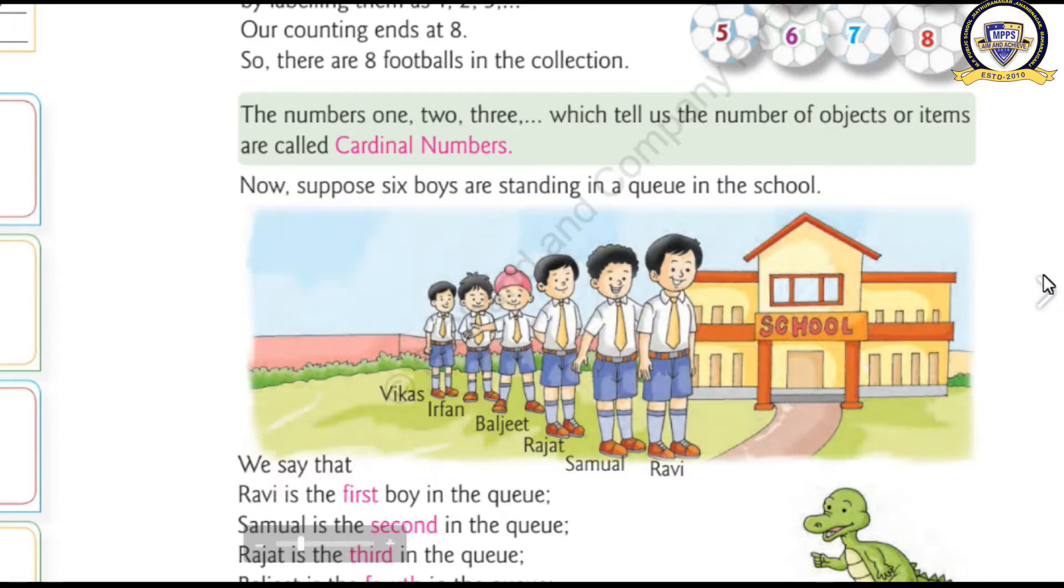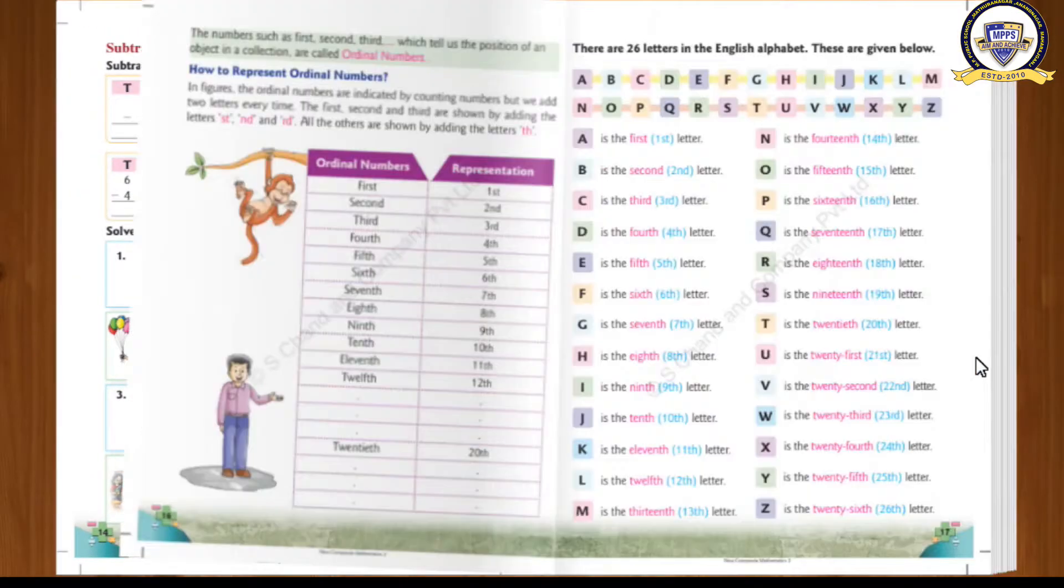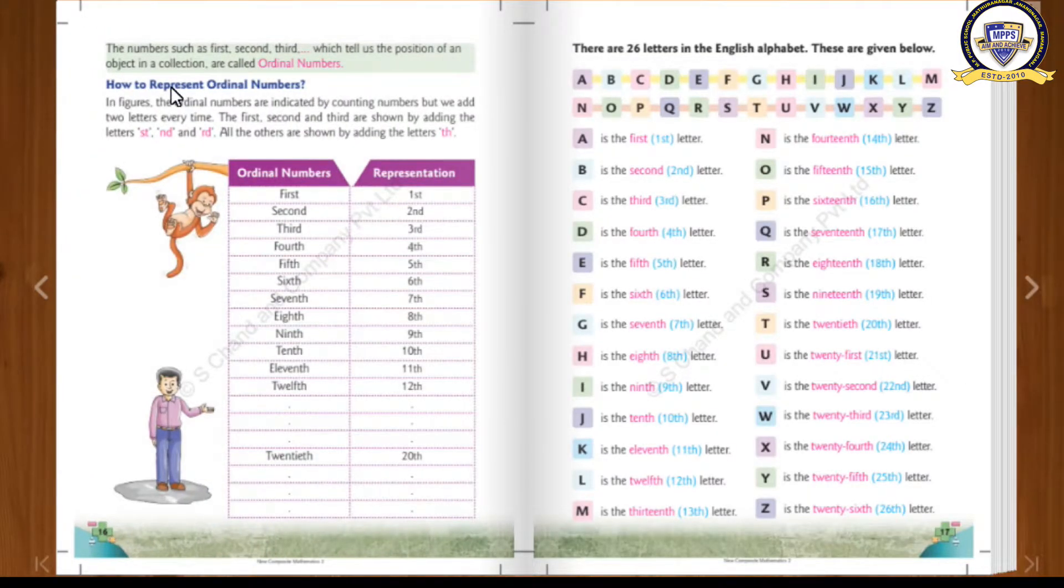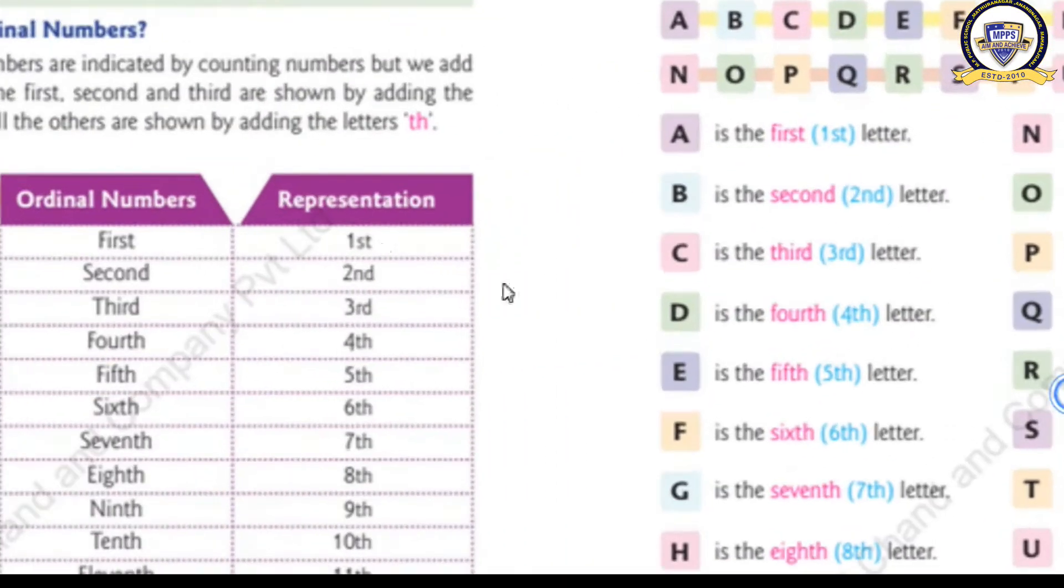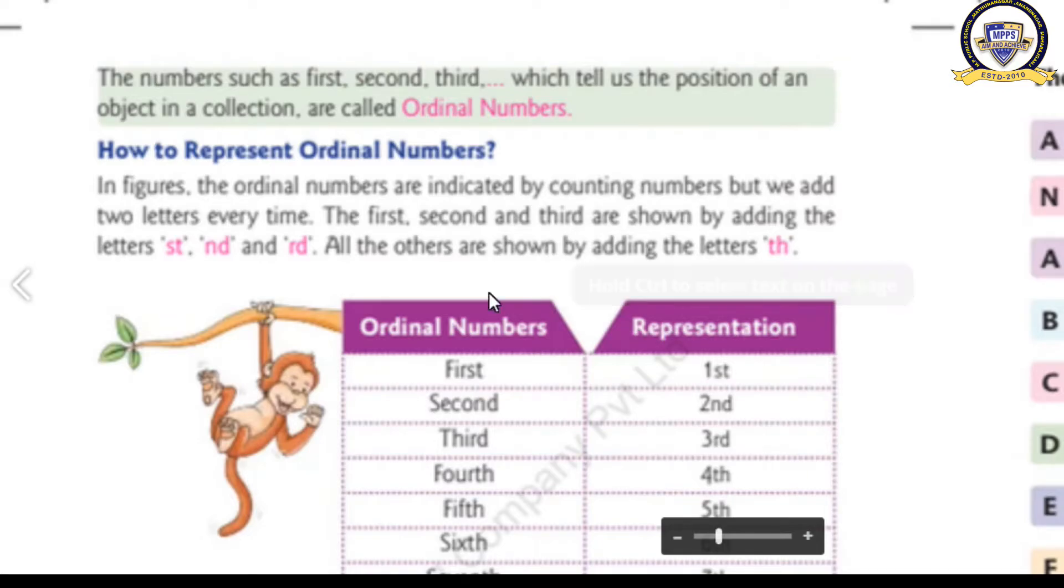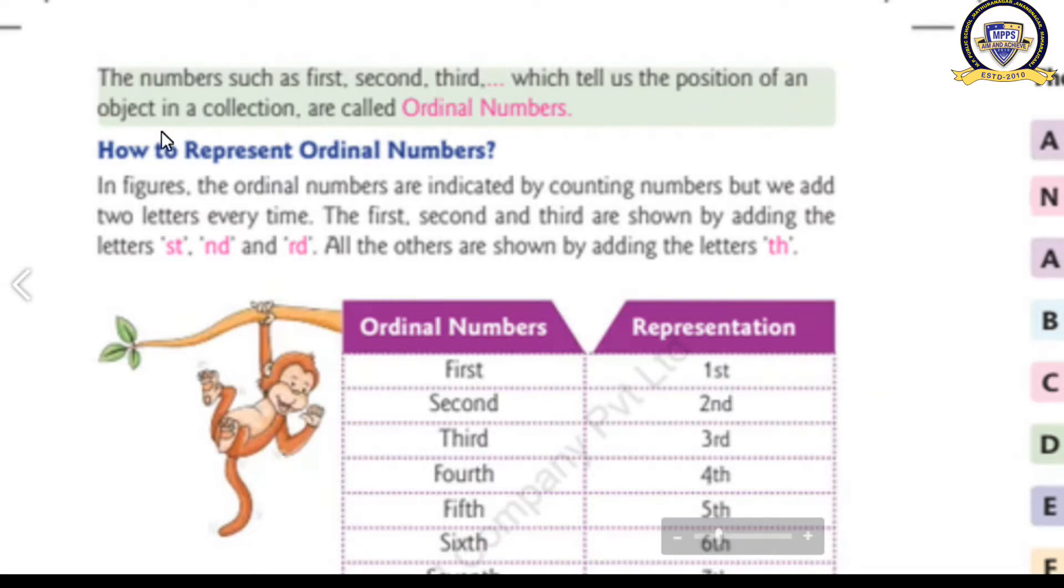That first, second, third, fourth, fifth, these type of numbers are called Ordinal Numbers. So, you got an idea regarding the Ordinal Numbers, I think. Ordinal Numbers are the numbers such as first, second, third, which tells us the position of an object in the collection. Are called Ordinal Numbers.